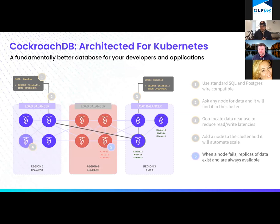Finally, when a node fails or even a whole region, we've created replicas of data so that the data still exists and you still have access to it. The cluster itself will actually remedy the situation — create a third copy of the data somewhere else — and we can actually survive failure of a node or a complete region.